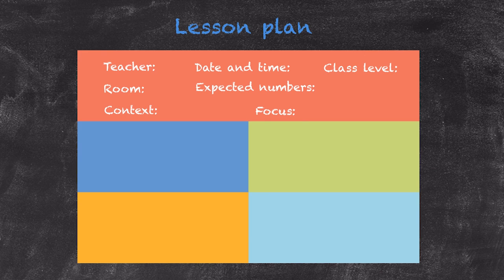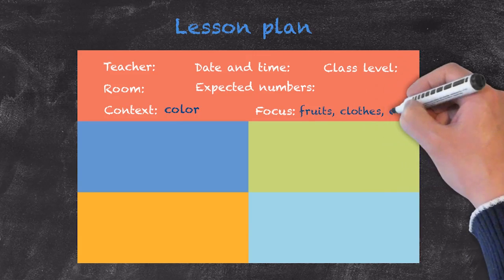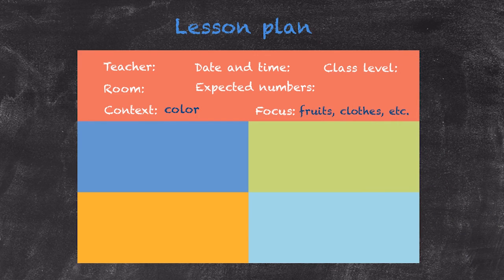Another example to illustrate this: let's imagine that we were teaching a starter class about color. Then our focus could be the way in which we're going to teach them about color. We could be using clothes or we could be using fruit and vegetables. So here the context would be color and the focus would be fruit, vegetables, clothes, or whatever.